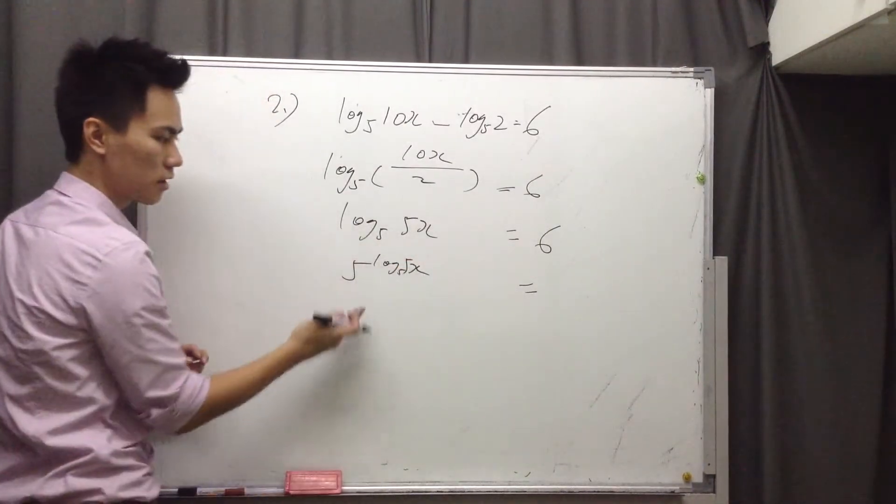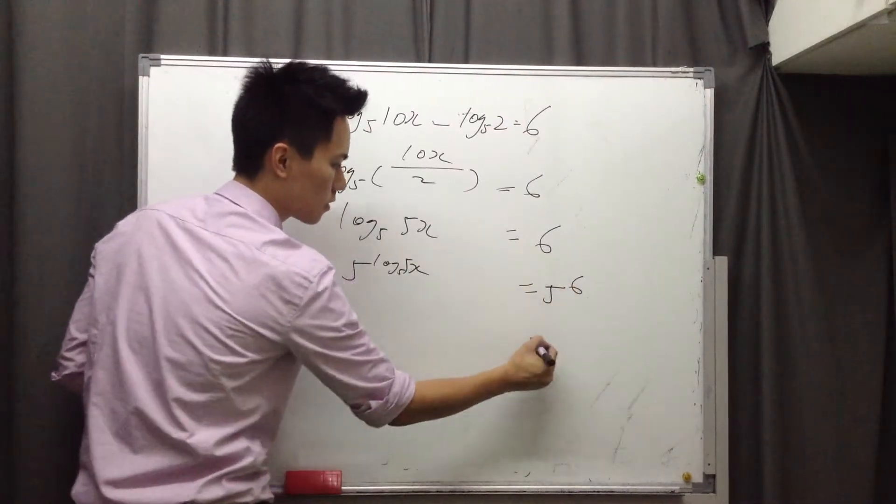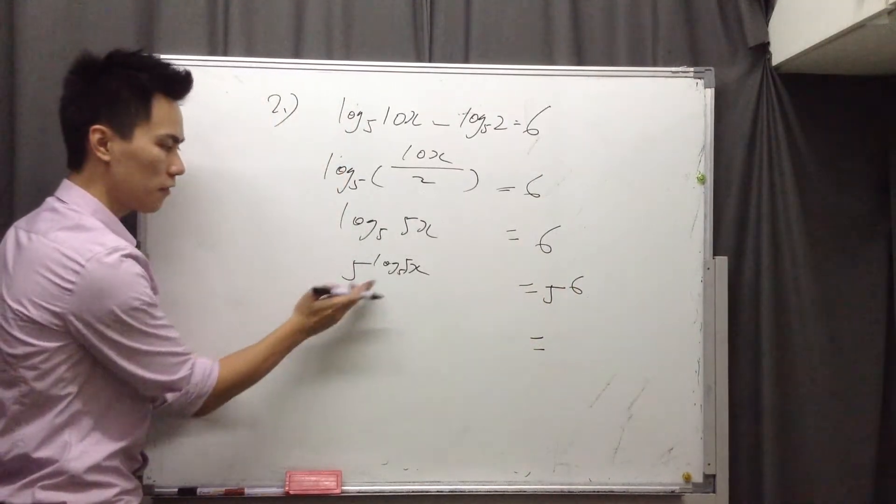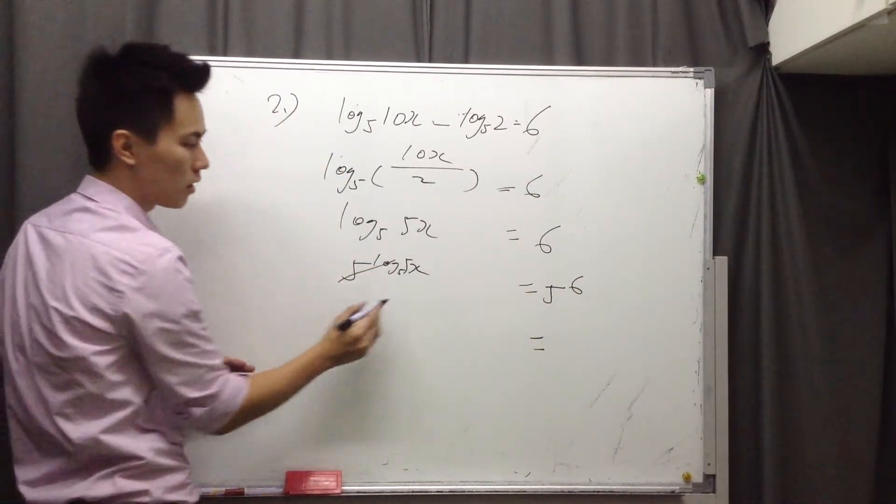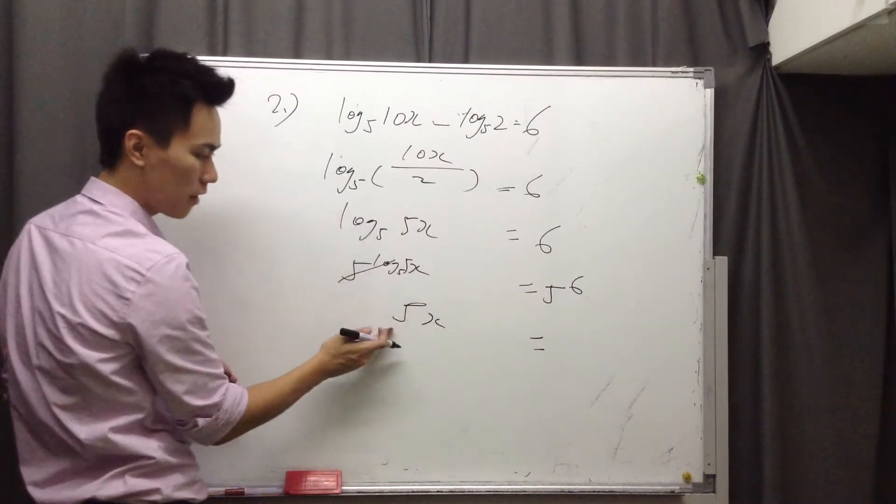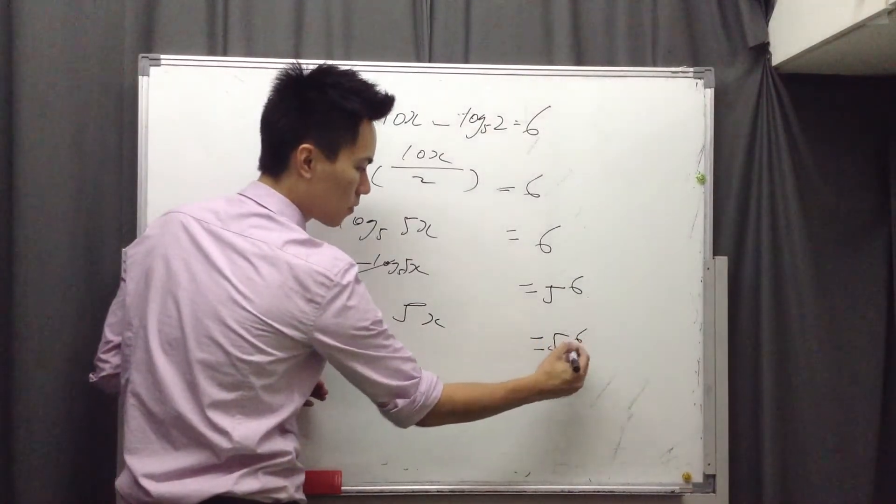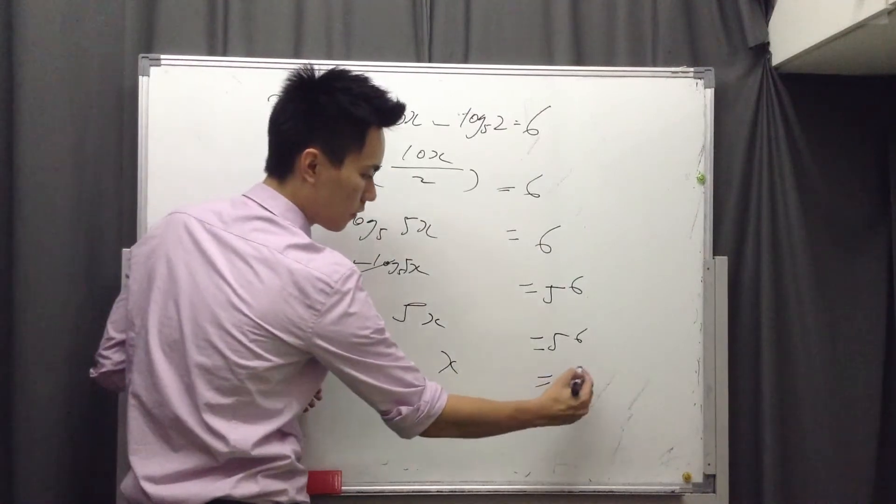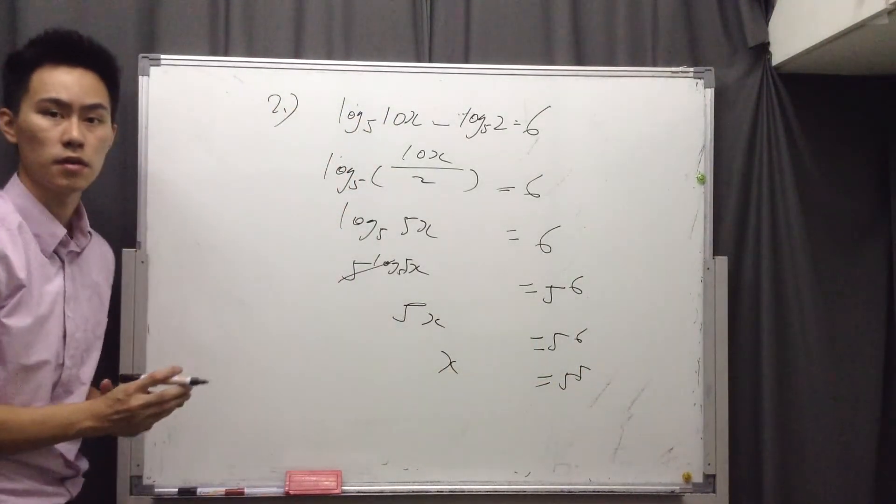So 5x here... 5 to the power of 6. The log 5 cancels out, and we have 5x equals 5 to the power of 6. Finally, x equals 5 to the power of 5.